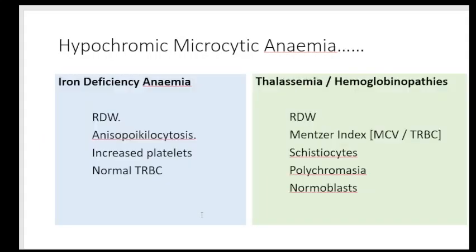The most common finding is a hypochromic microcytic anemia, and the two differentials are iron deficiency anemia or thalassemia/hemoglobinopathies. Looking at the CBC, there are pointers to help: an increase in the red cell distribution width (RDW), presence of increased platelets, and a normal total RBC count. These three features — anispoikilocytosis reflected numerically by elevated RDW, increased platelet count, and normal total RBC count — favor iron deficiency anemia.